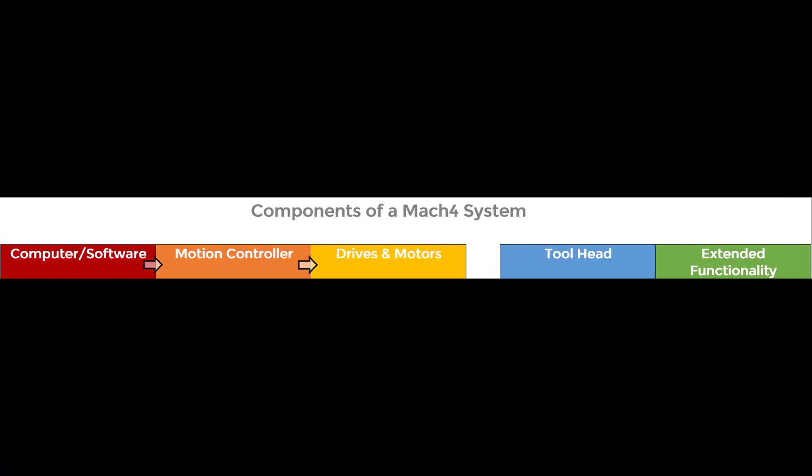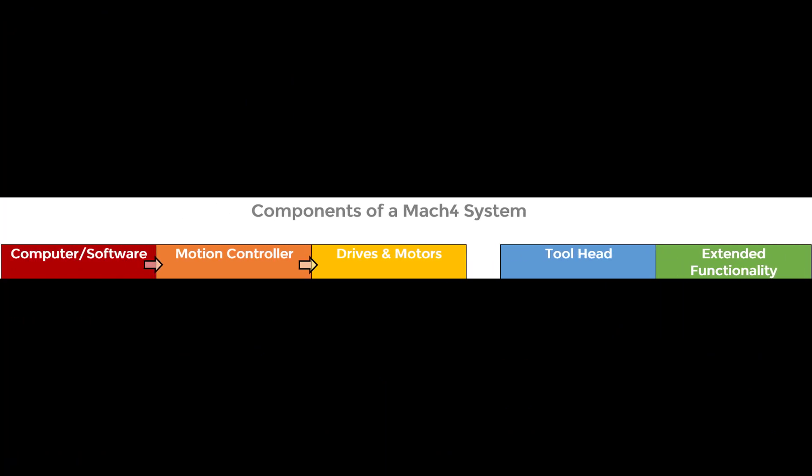We'll start with the most basic definition of a system, which includes a computer and software, a motion controller, drives and motors, and the option to include a specialized tool head and extended functionality.